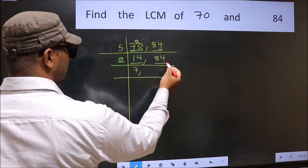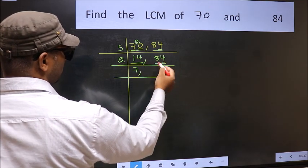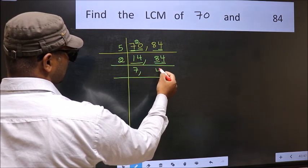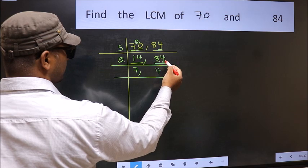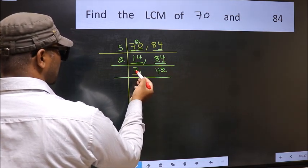The other number 84 last digit 4 even. So this is divisible by 2. First number 8. When do we get 8 in 2 table? 2 fours 8. The other number 4. When do we get 4 in 2 table? 2 twos 4. Now here we have 7.